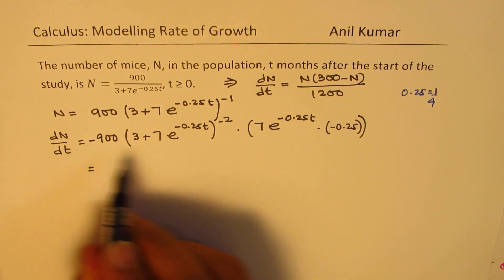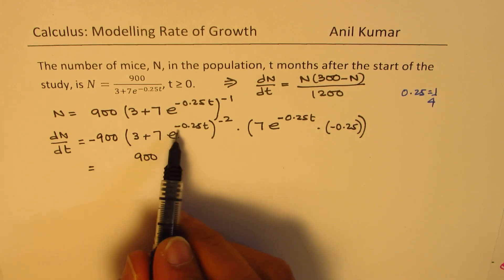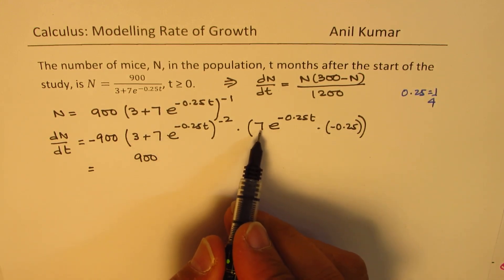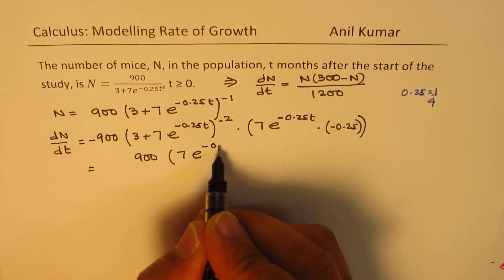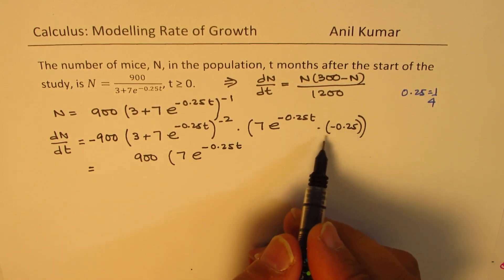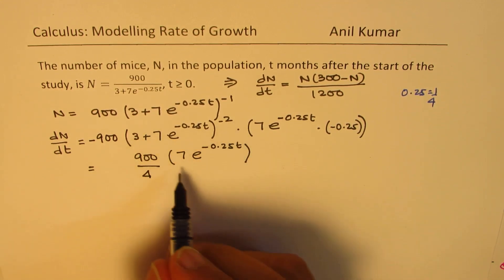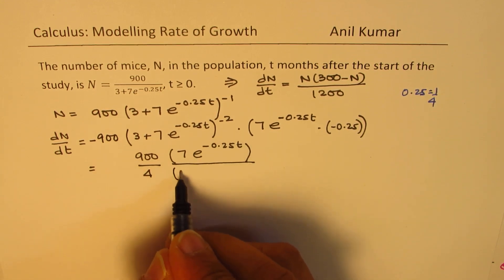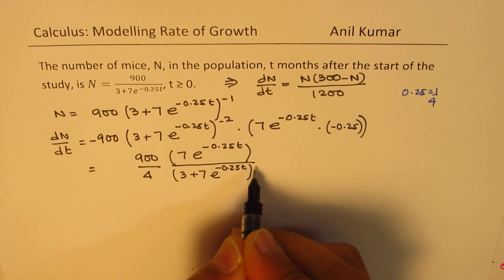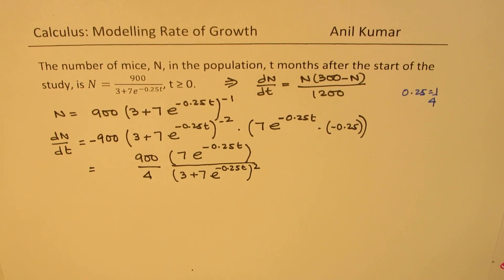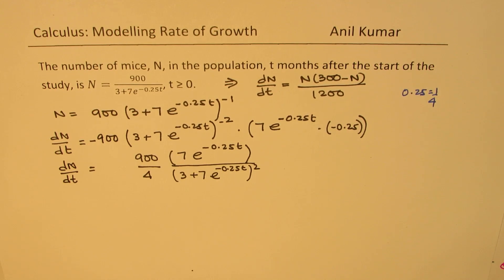So in the numerator we have 900, and in the denominator we have 7e to the power of minus 0.25t times (1 over 4), and also (3 plus 7e to the power of minus 0.25t) squared. That is the derivative — the rate of change of the population of mice with time. But we have to write it in the required form, which is n times (300 minus n) over 1200.